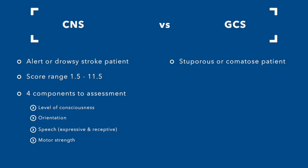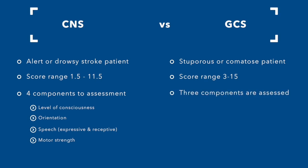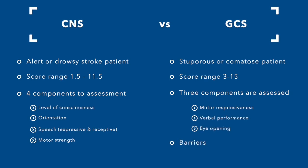For the stuporous or comatose patient, the Glasgow Coma Scale is used with a score range of 3 to 15. Three components are assessed: motor responsiveness, verbal performance, and eye opening. Barriers to the CNS include no definitions for the grading scale and no language component.